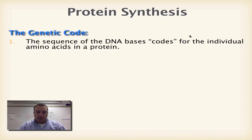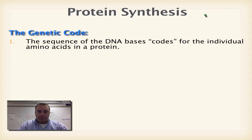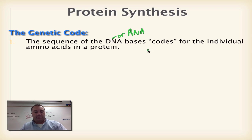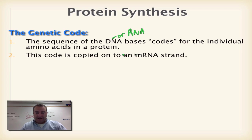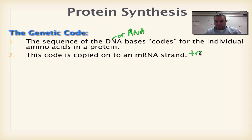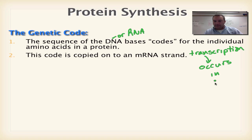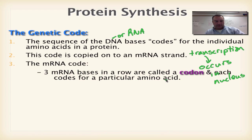The genetic code is actually the sequence of DNA bases or RNA, and it's going to code for an individual amino acid. The code is copied onto the mRNA strand — remember, that is the process called transcription. And transcription in eukaryotes occurs in the nucleus.